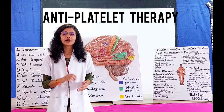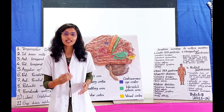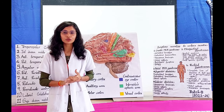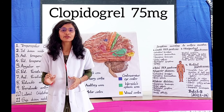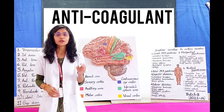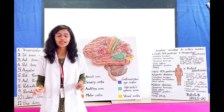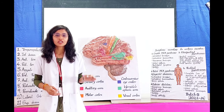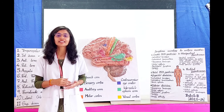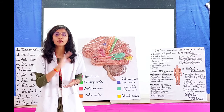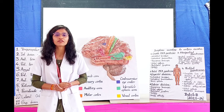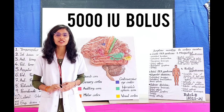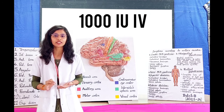The next treatment is antiplatelet therapy. The drug of choice is aspirin at 300 mg daily in the initial days, followed by tapering to 150 mg with clopidogrel 75 mg daily. The next is anticoagulant therapy. Routine use of anticoagulants in acute ischemic stroke is not recommended. Indications for use: high risk of early cardiogenic embolism, hypercoagulable state, and atherosclerotic stenosis with transient ischemic attack. The anticoagulant used is low molecular weight heparin at 5000 international units initially, followed by tapering to 1000 international units intravenously daily.